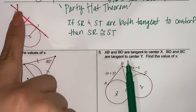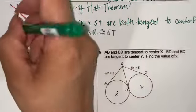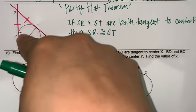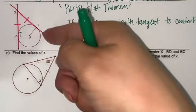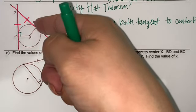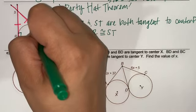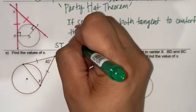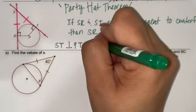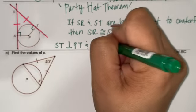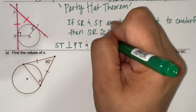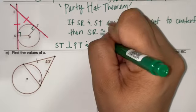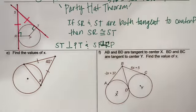When you have a tangent line, you're also going to form a right angle when it's tangent to the radius. Because you have a second tangent line connected to the radius, it also creates a right triangle. ST is perpendicular to PT, and SR is perpendicular to RP.